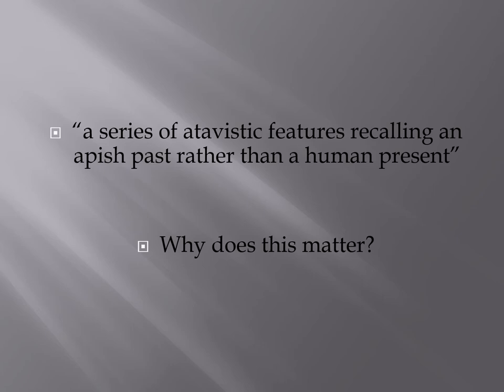Even further, Lombroso associated this with race, saying that most criminals are people of color within these societies because they have a lower evolutionary trend than non-criminal white people. We know today this is absolutely ridiculous — there is no such thing as an atavistic feature, and so-called atavistic features do not correspond to any notions of criminality.